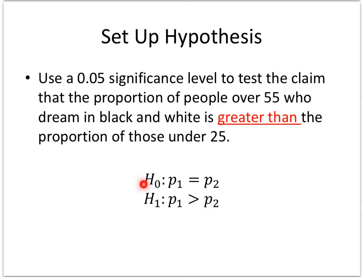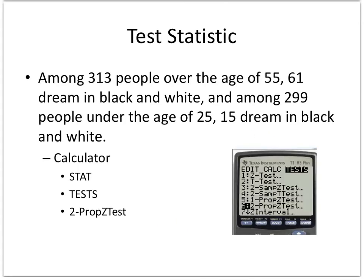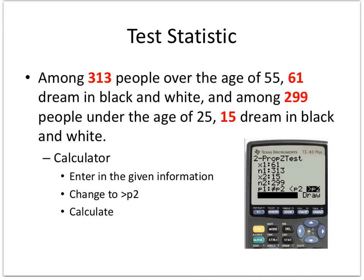Our null hypothesis is that there's no difference. Our alternative hypothesis is what we're trying to test — that the proportion is greater. We definitely want to use your calculator. There is a two-proportion Z-test, so we can use STAT > TEST > 2-Prop Z-Test.